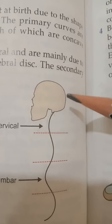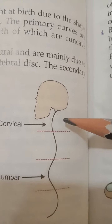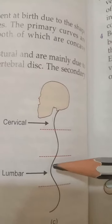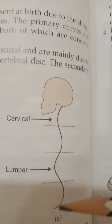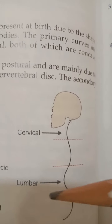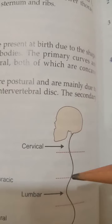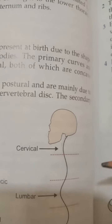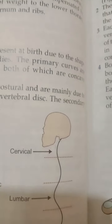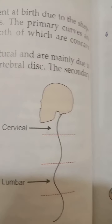The cervical curve appears during the 4th to 5th month after birth, when the infant starts supporting the head. The lumbar curve occurs during 12 to 18 months when the child assumes the upright posture. In the coronal plane, there is a slight lateral curve in the thoracic region with the concavity towards the left, possibly due to greater use of the right upper limb and the pressure of the aorta.